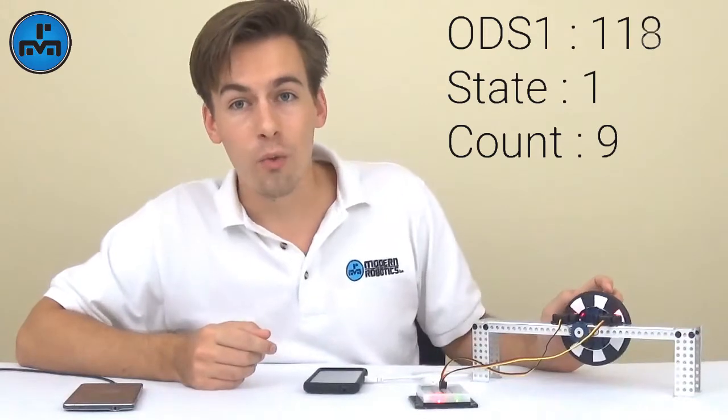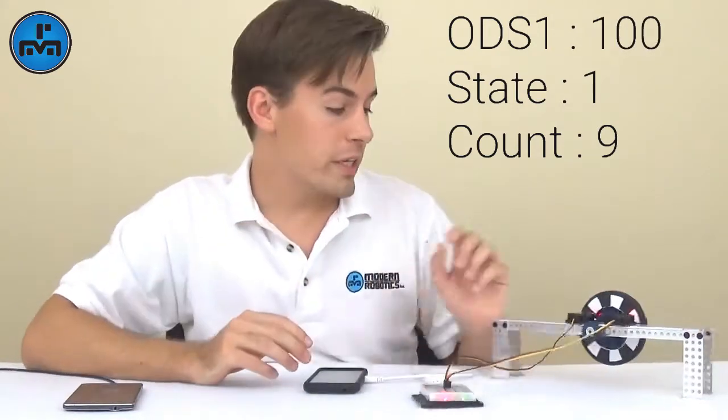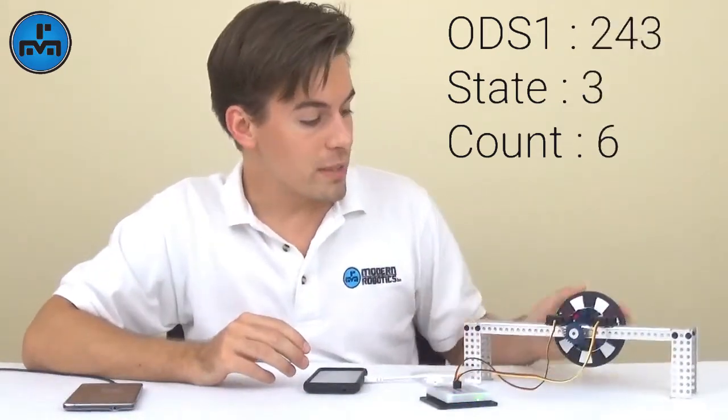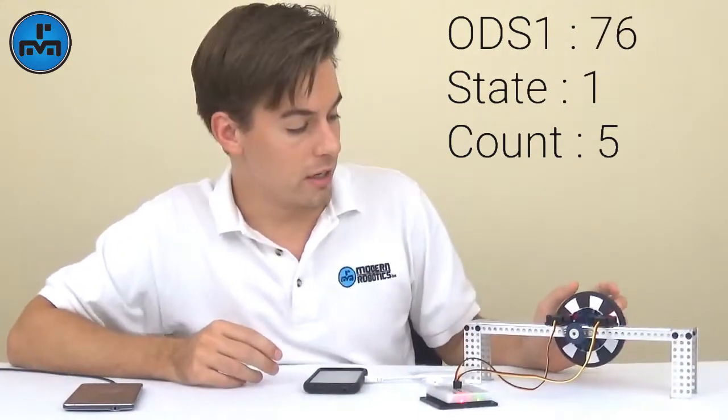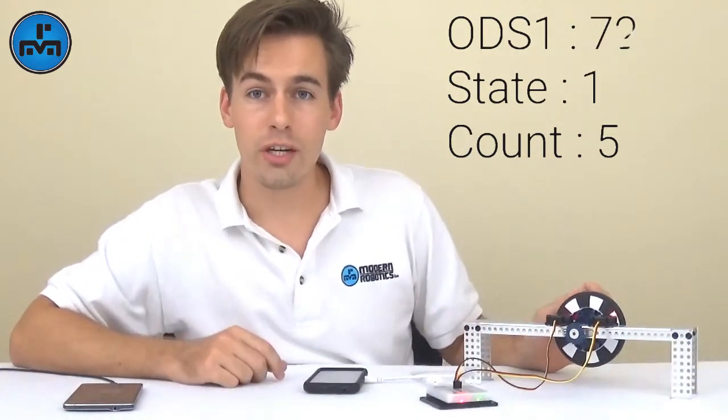So we can tell, based on what the previous state was and what the next state was, that we moved 1/14th of the way around the wheel, and actually now it's 1/28th, because we have four states going around. So there's one state between each of these sections now. And we know in which direction that turned.